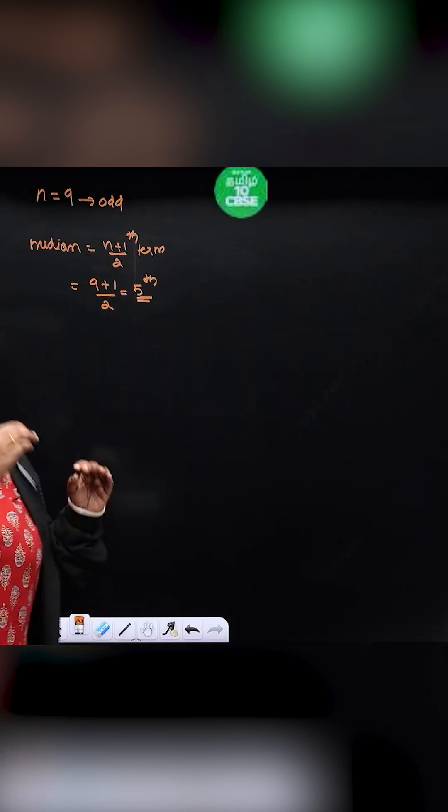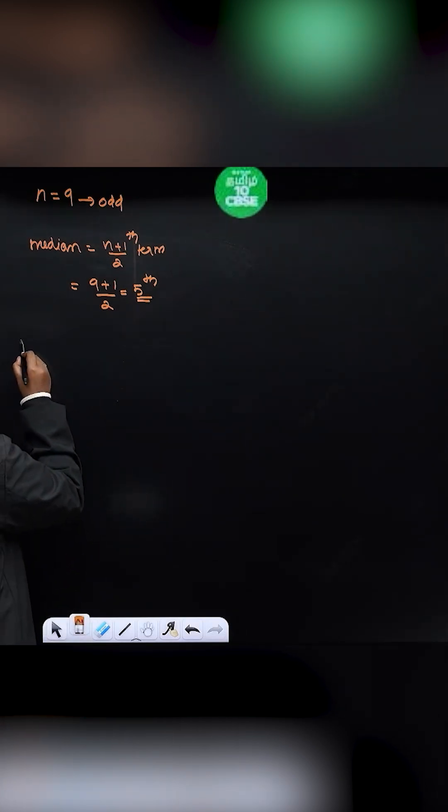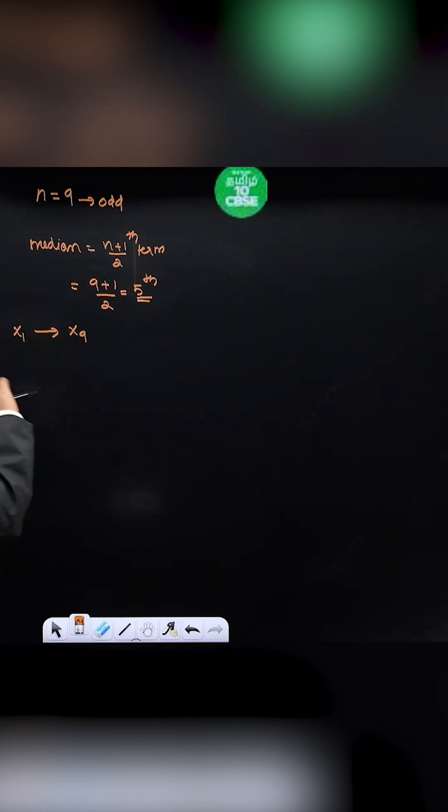So first of all, what I told you about, every observation is increased by 2. So that is, I have 9 observations. So x1 through x9 are the observations. In the observations, I am increasing each observation by 2.